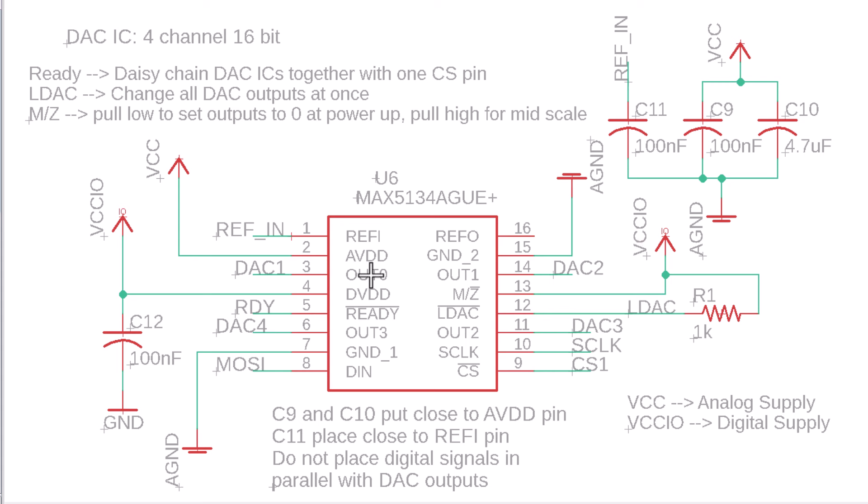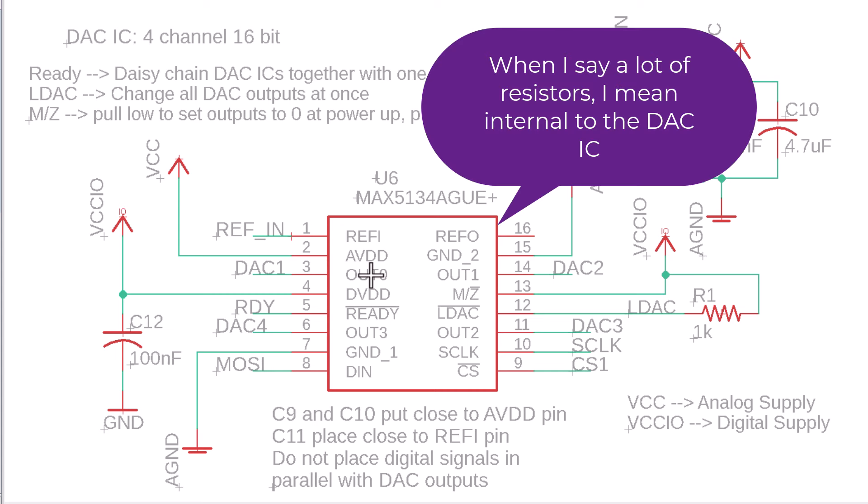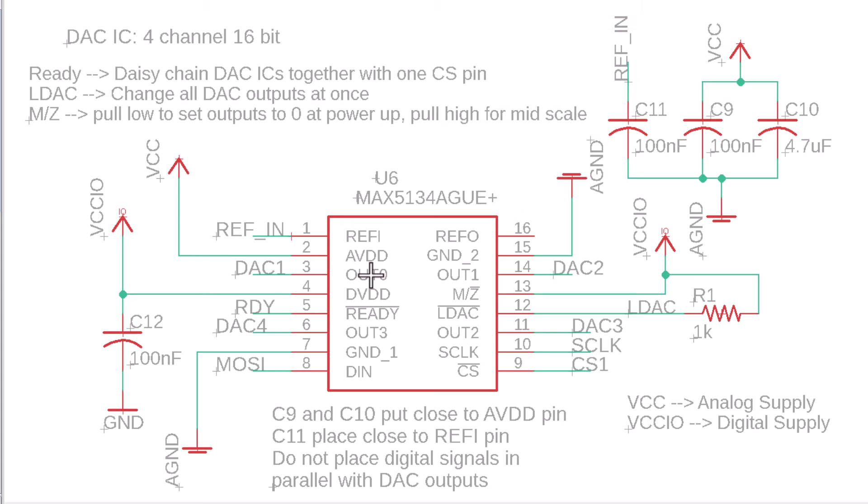I'll mention that this is a string DAC — I'm not going to go into DAC architectures in this video, but a string DAC uses a lot of resistors for setting the output value. DACs come with a lot of specs that can be hard to understand; I have an older video series covering those in depth, and I'll include a link. So that's how we implement the MAX5134. Let's look at the rest of the circuit.